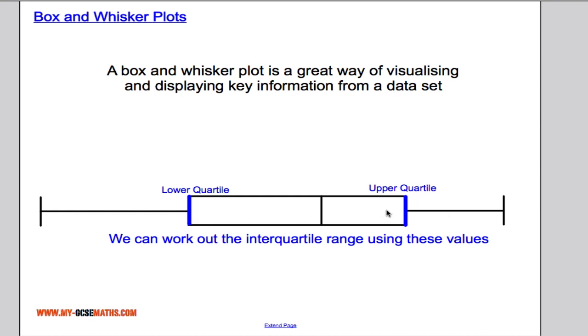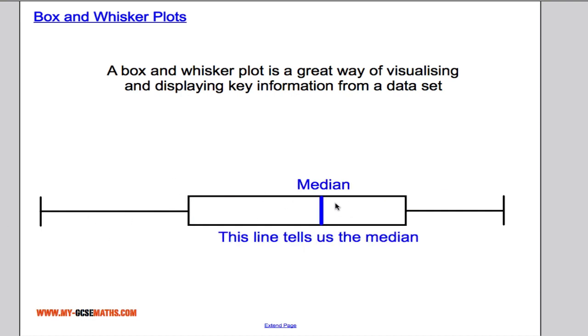These two parts of the box and whisker plot will show us the lower quartile and the upper quartile and again using these we can work out the interquartile range. And then finally this middle line here tells us the median.